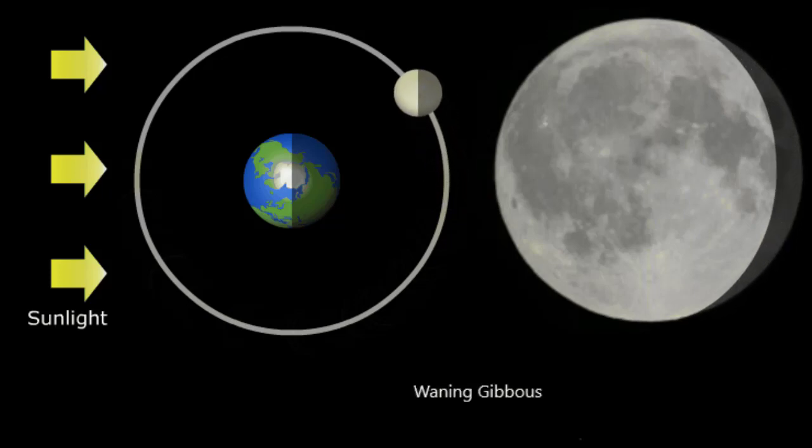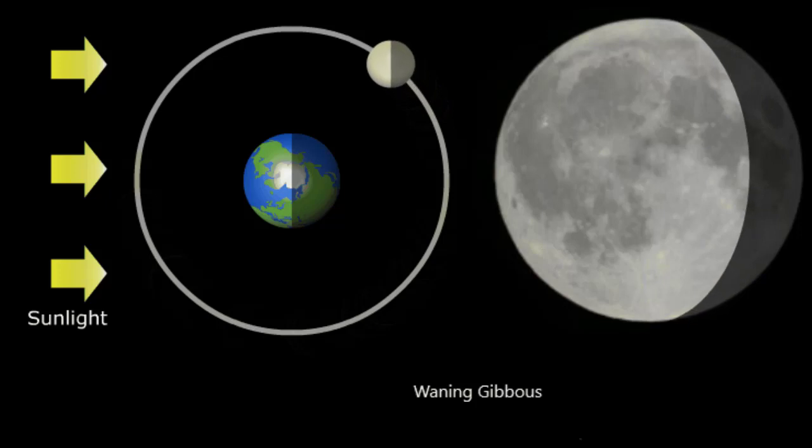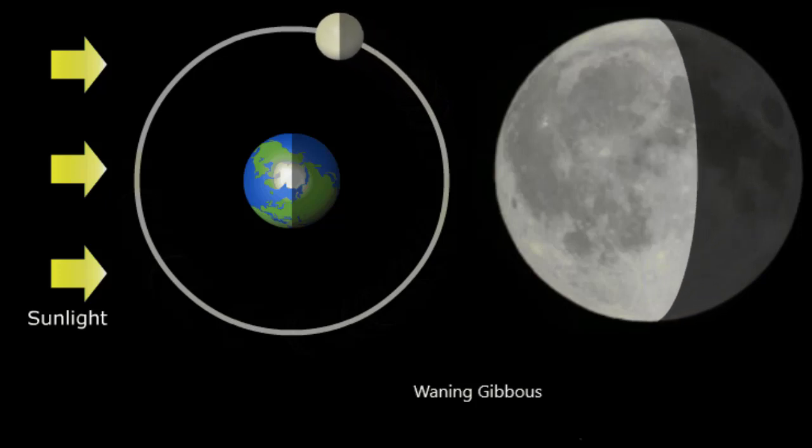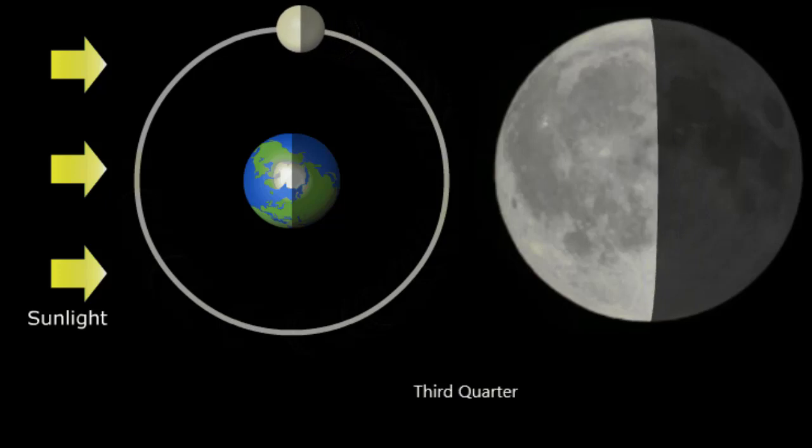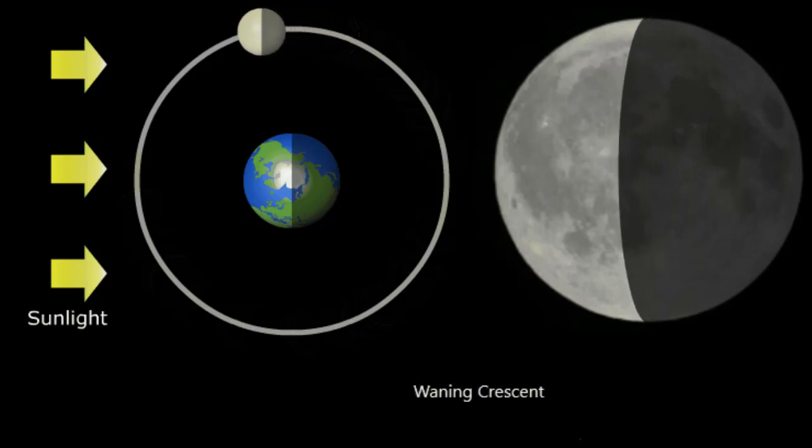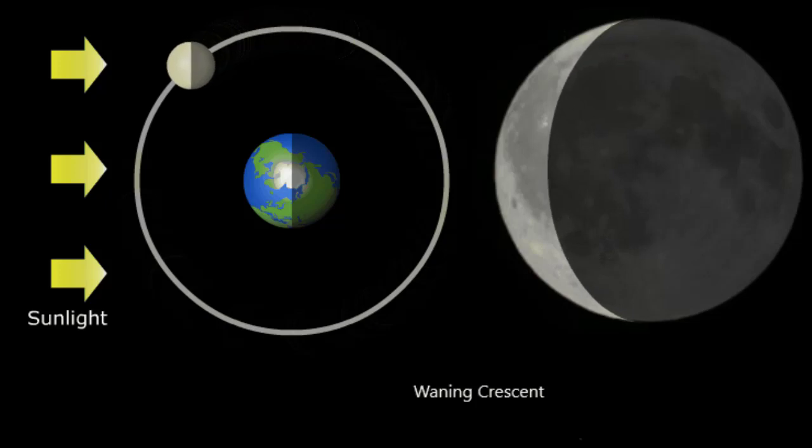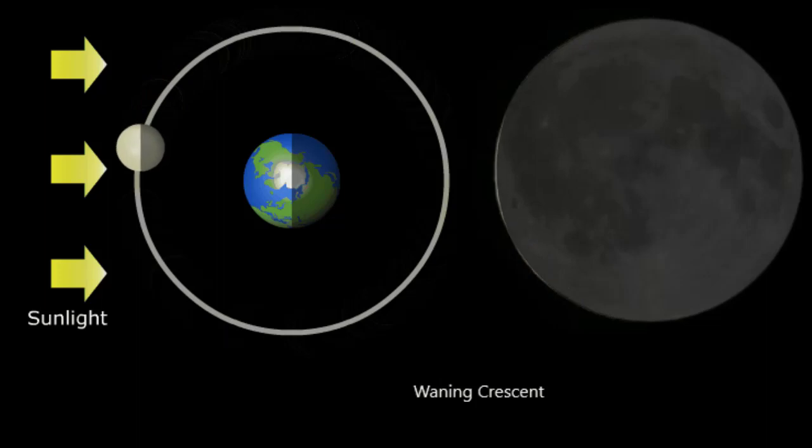This dependence on astronomical observations makes it difficult to predict the length of Islamic months. Clouds and other adverse atmospheric conditions can obscure an otherwise visible crescent moon. When this happens, the month may be extended by a day, delaying the beginning of the new month.